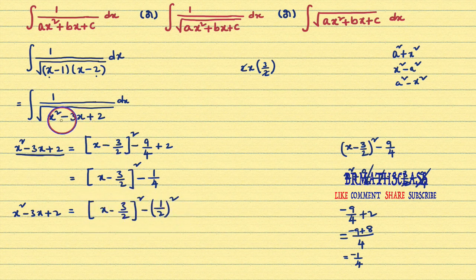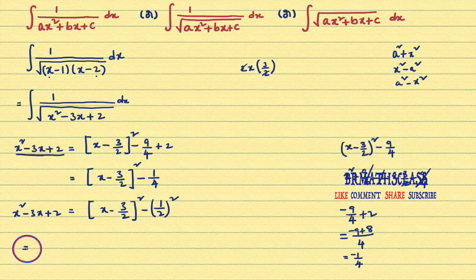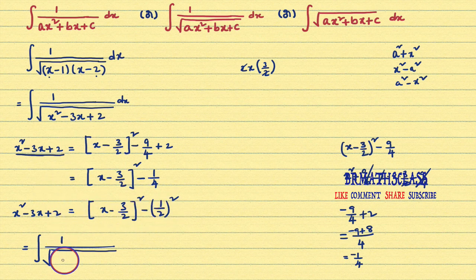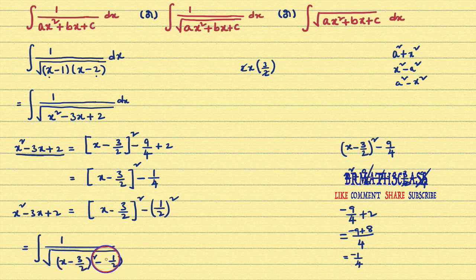Now, in this integral, in place of x² - 3x + 2, you can write this expression. So this equals integral of 1 divided by square root of (x - 3/2)² - (1/2)² dx.